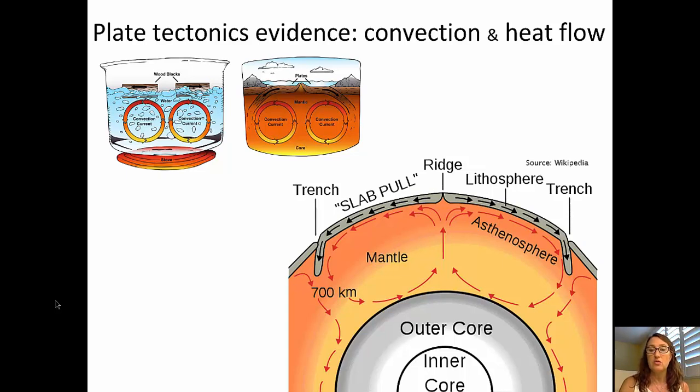So in the bottom right-hand corner, you can see a little diagram that shows Earth's structure, the inner core and the outer core, but then those convection currents that are set up in Earth's mantle where heat's being transmitted through the mantle up through the asthenosphere, and it's causing those plates at the surface to move apart.